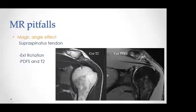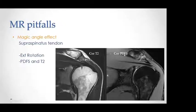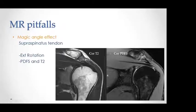Magic angle effect is a problem with the supraspinatus tendon. A good example: signal change appears in the supraspinatus tendon on the coronal PDFS, but is absent on the coronal T2 — this is a false signal, an artifact, not a true tear.